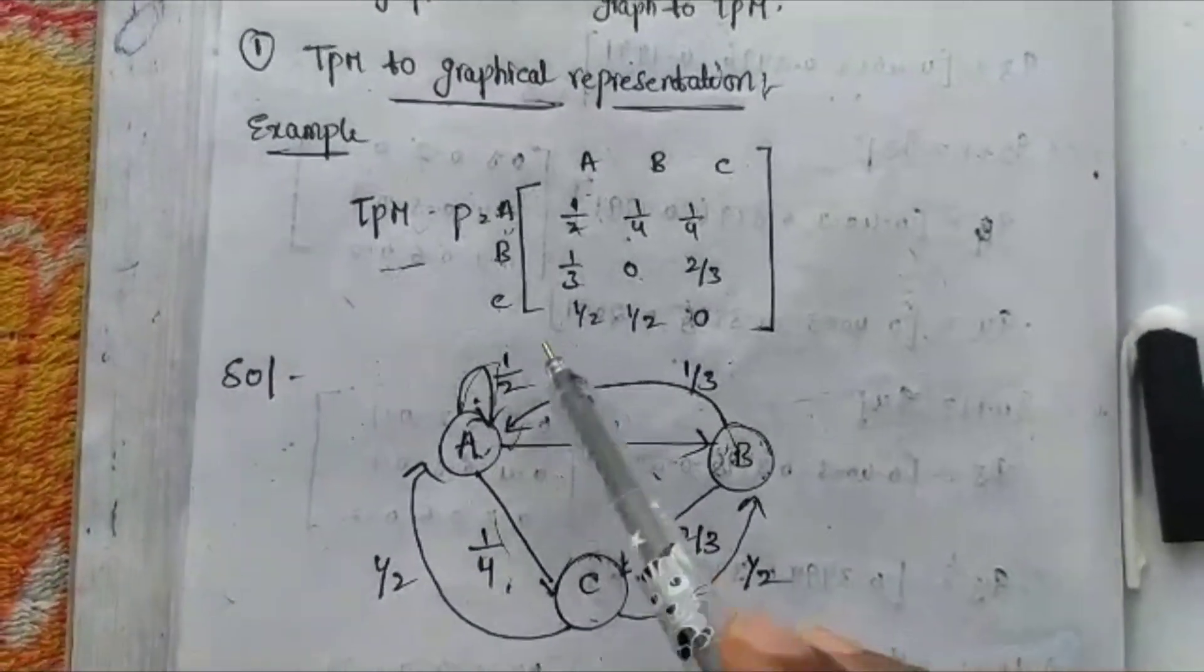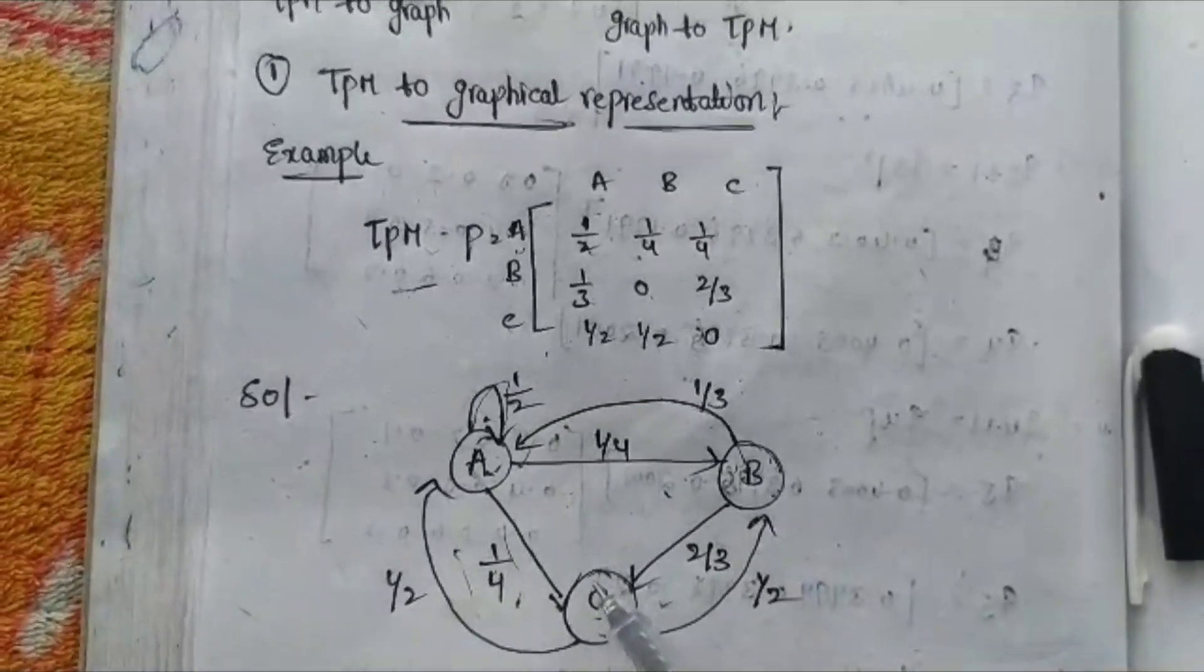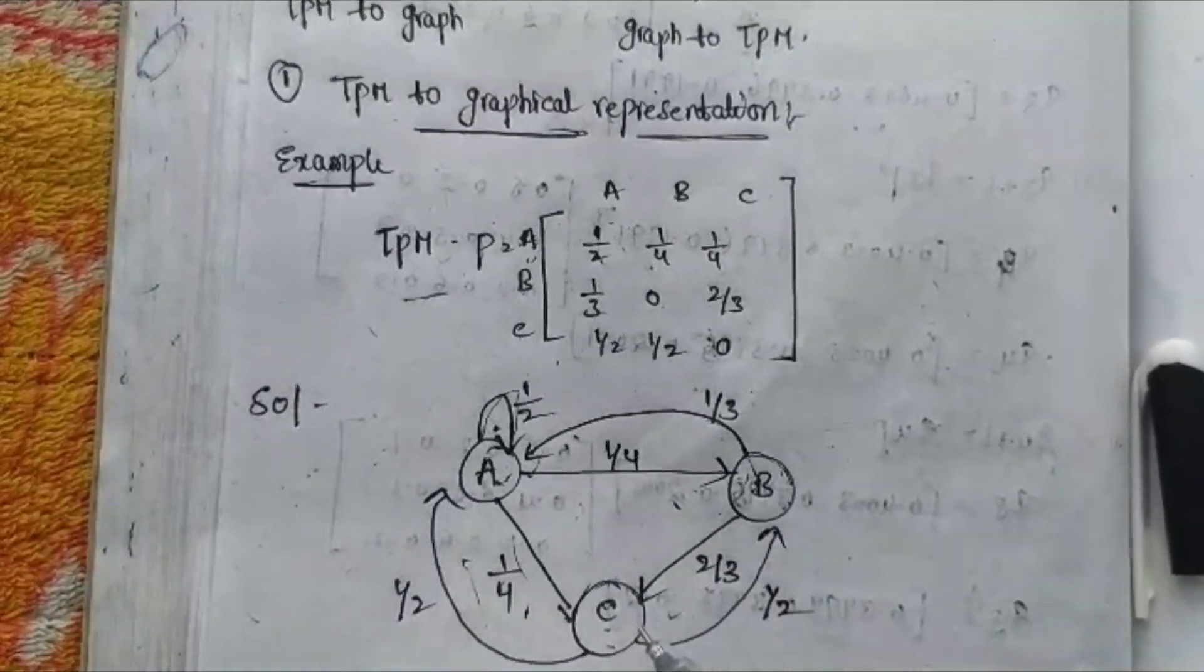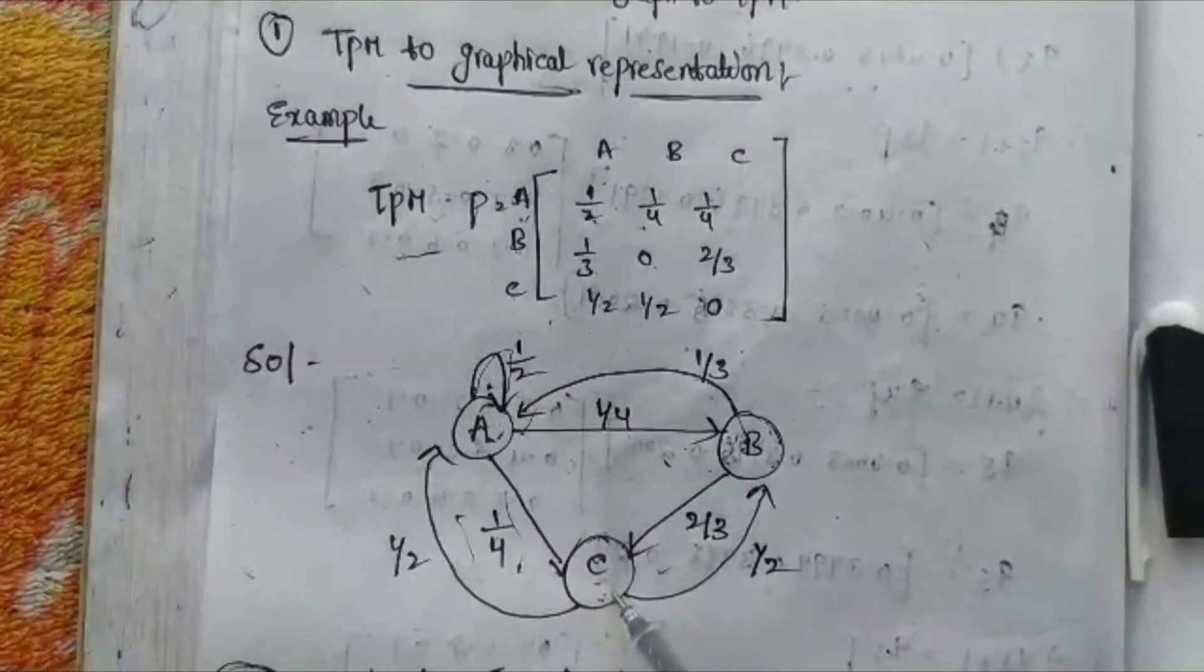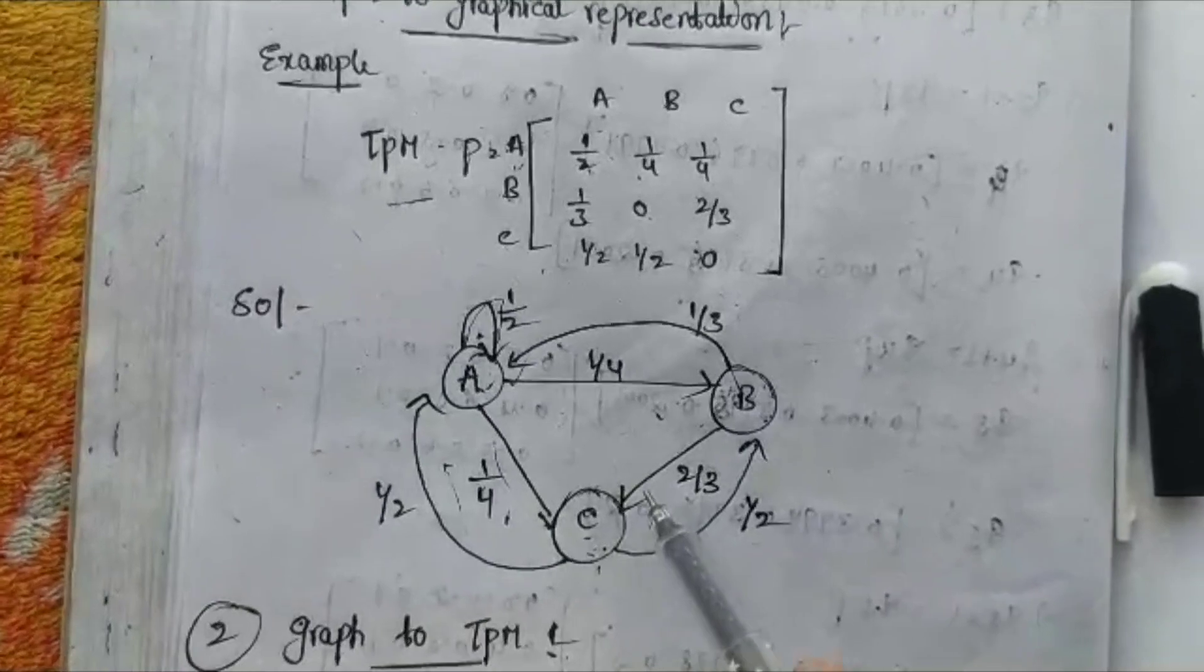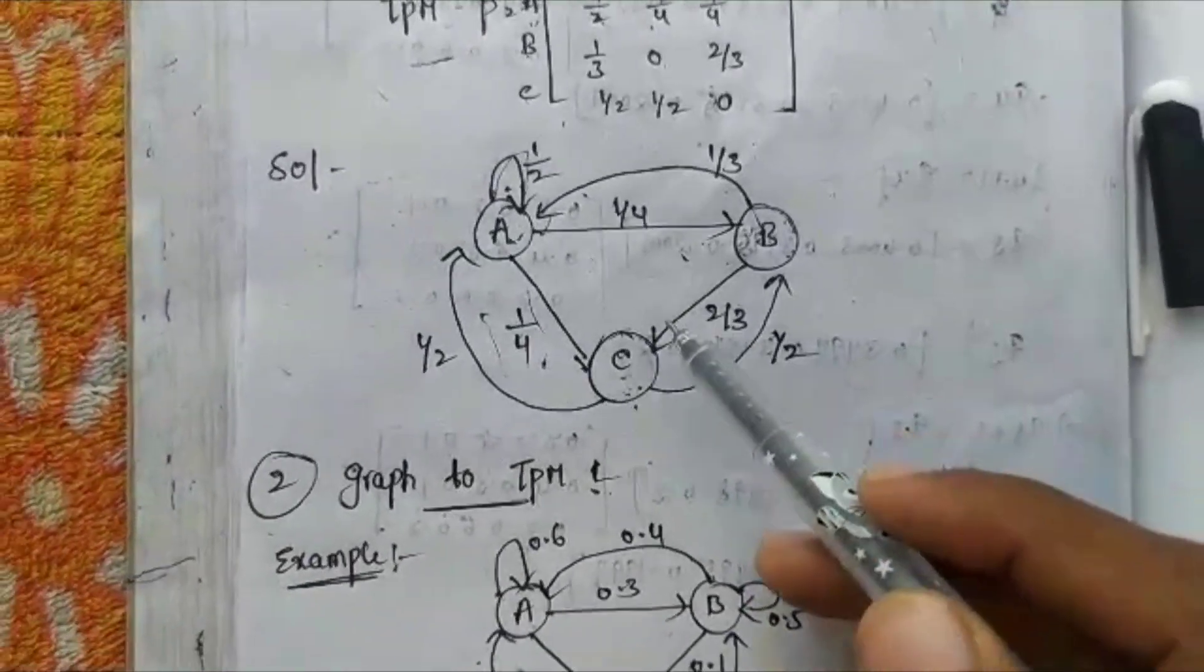C to A is 1/2, and C to B is 1/2, and C to C is 0, so C also does not have a self-loop. This completes the first method.